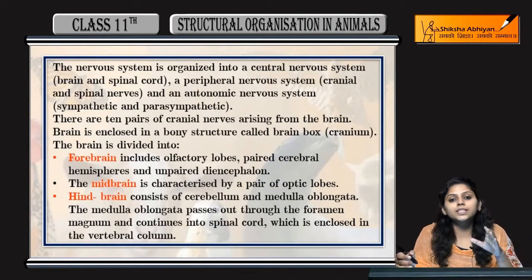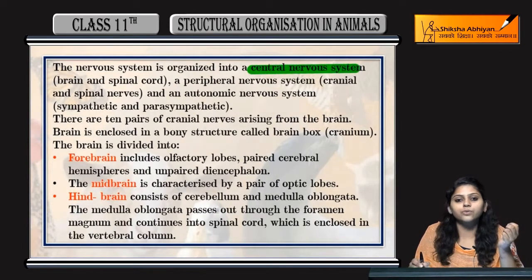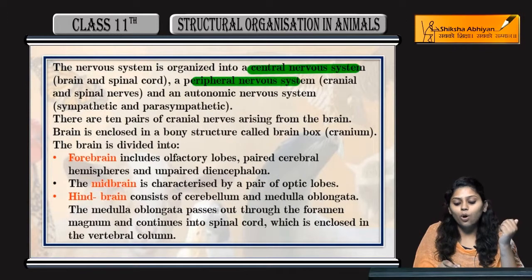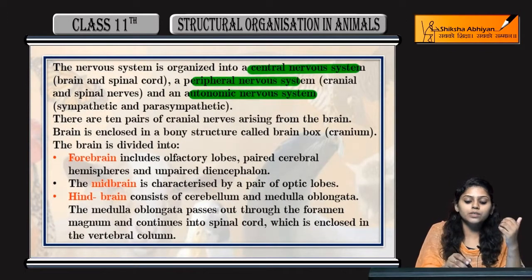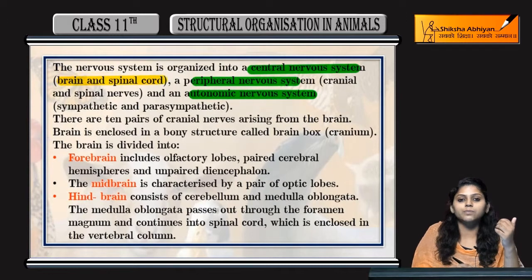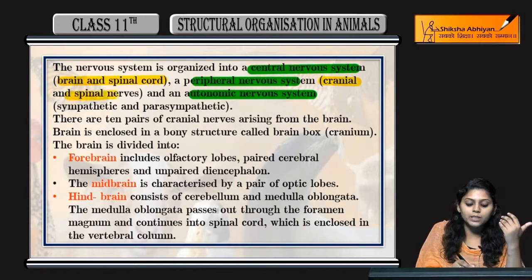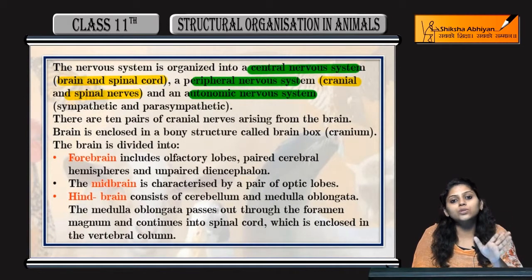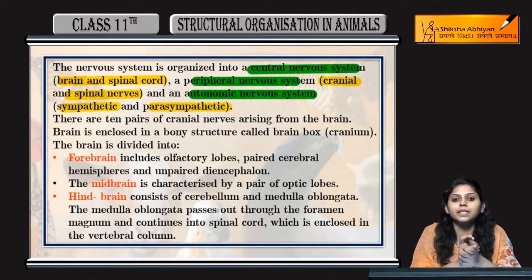जो nervous system है frog का, that is organized into central nervous system, peripheral nervous system and autonomic nervous system. Central nervous system consists of brain and spinal cord. Peripheral nervous system consists of cranial and spinal nerves. Autonomic nervous system consists of sympathetic and parasympathetic.